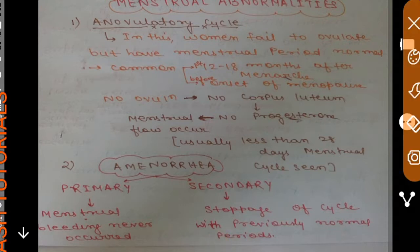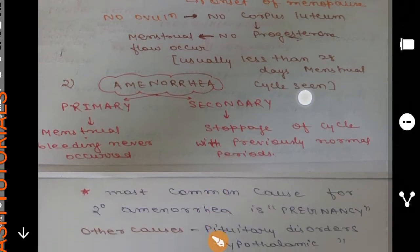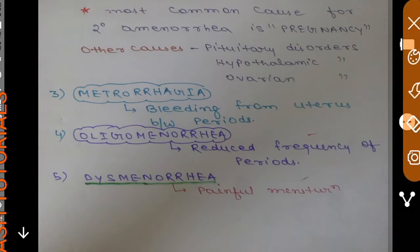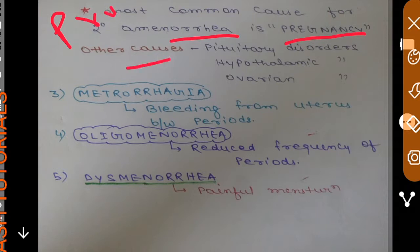The most common cause of secondary amenorrhea is pregnancy, due to the prolactin hormone. Other causes include pituitary disorders and hypothalamic disorders, as well as ovarian disorders. The pituitary releases gonadotropins FSH and LH, the hypothalamus releases GnRH, and the ovaries release estrogen and progesterone.